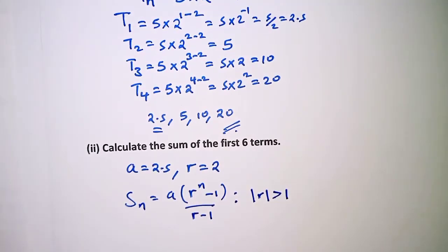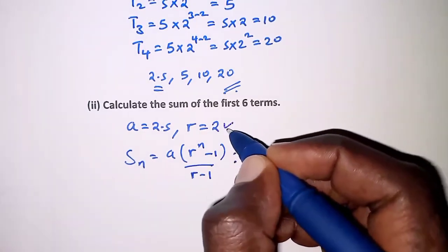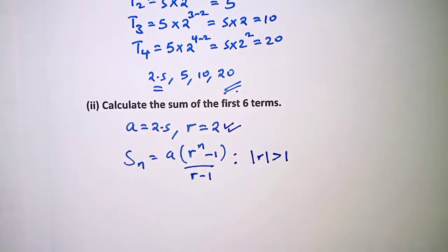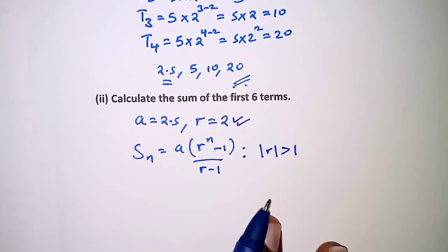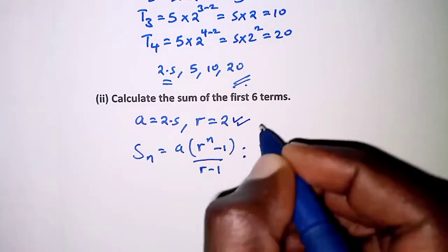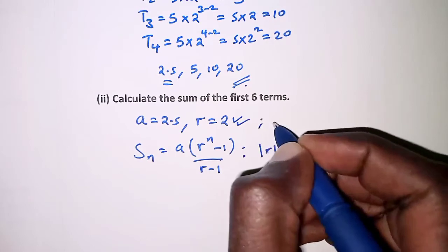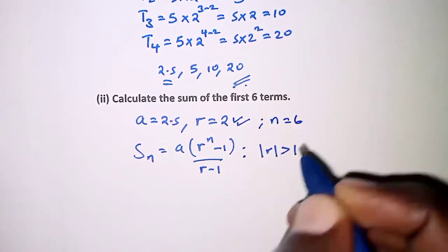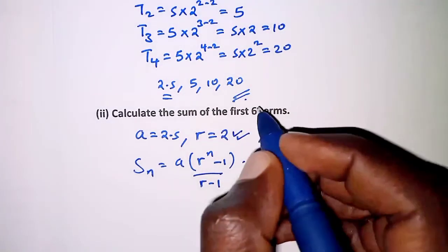So already we have r as 2, so that's why we use this formula. We also need to note that n is 6, because we are required to get the sum of the first 6 terms.